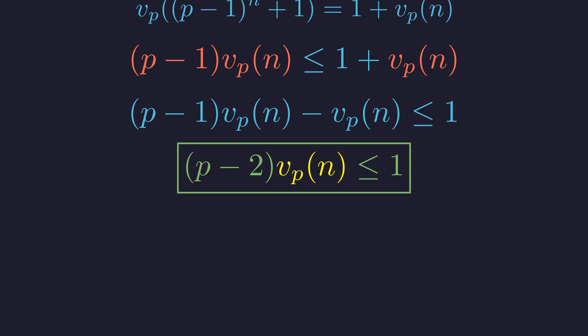Since p is an odd prime, p is at least 3, so p-2 is at least 1, and v_p(n) is a non-negative integer. This leaves very few possibilities. This inequality splits our search into two distinct cases.